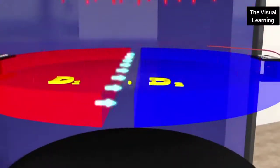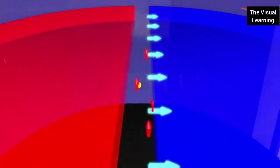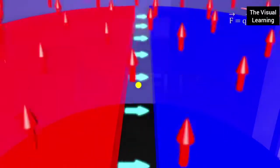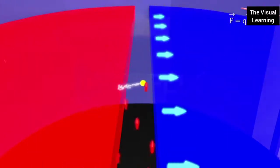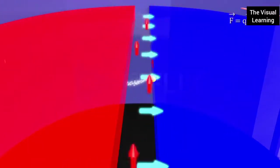When a positive charge is placed between the D's, it experiences an electric force F bar equal to QE bar, due to which the particle accelerates from D1 to D2.